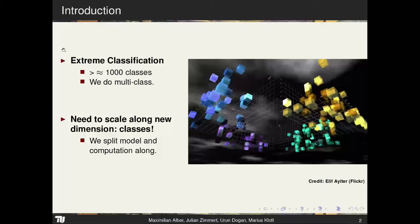We're doing extreme classification, meaning the number of classes is at least 1,000 and in many datasets even 10,000 or more. We're doing multi-class, though it's not too hard to generalize this approach to multi-label. The big problem with extreme classification is that we have an additional dimension: the number of classes.